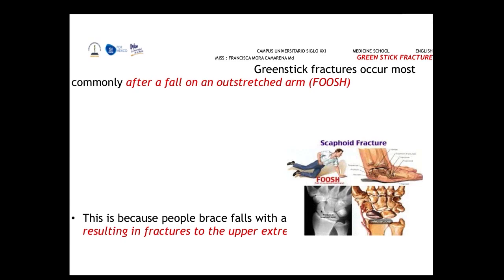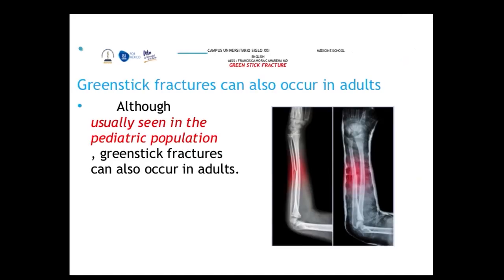Greenstick fractures most commonly result from falling on an outstretched hand, known as FOOSH (fall on outstretched hand), as we try to stop our fall with our hands, fingers, or arms. It is important to remember that although most greenstick fractures occur in the pediatric population, they can also occur in adults, though this is not common.